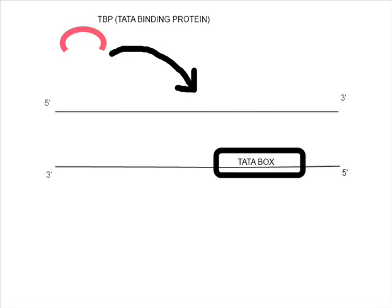The complex starts with the binding of TF2D to a double-stranded DNA. TF2D is a multi-protein complex that contains TBP, which stands for TATA binding protein, and TAFs. The TATA binding protein uses the TATA sequence of the DNA to determine its binding site.